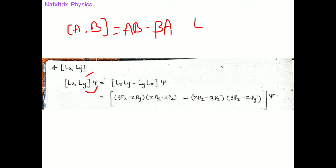We know the famous formula L = r × p. Taking r = x·î + y·ĵ + z·k̂ and p = px·î + py·ĵ + pz·k̂, we do the cross product between them. From this, the Lx component and the Ly component are obtained.